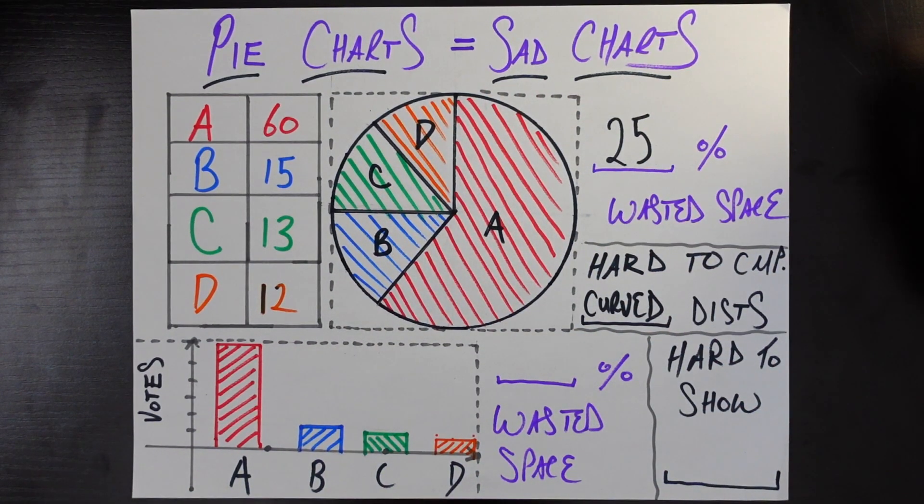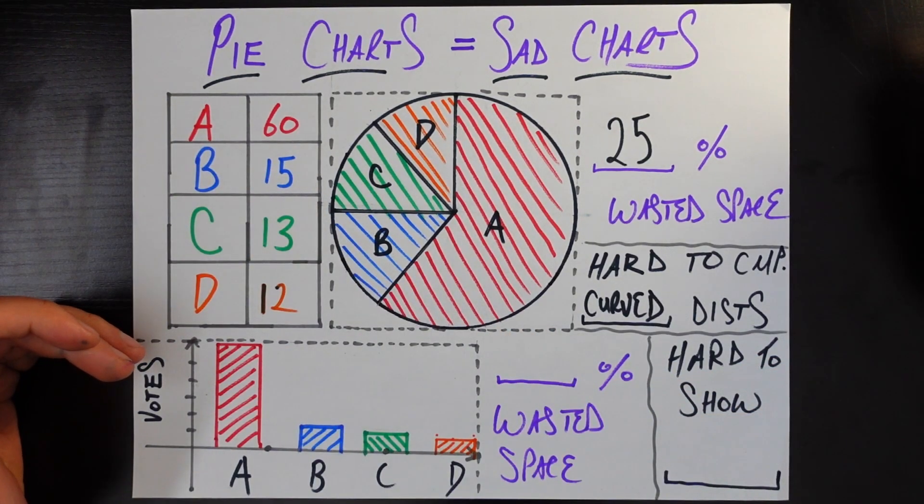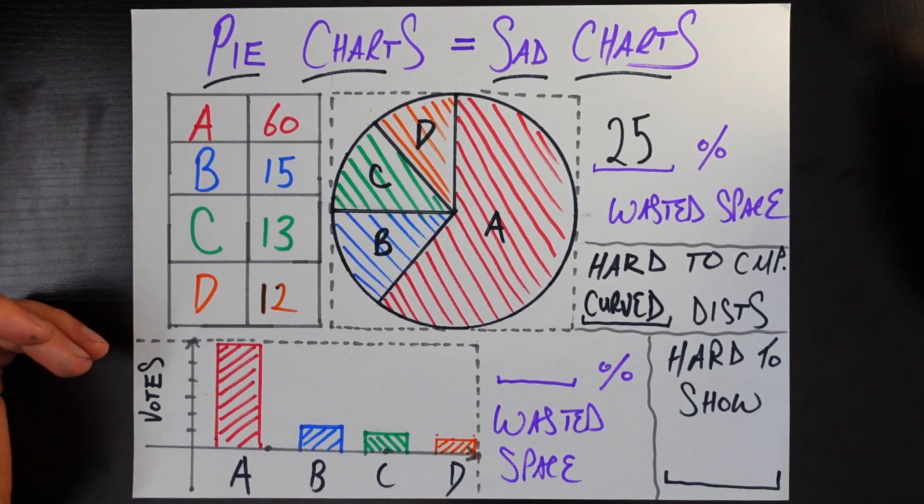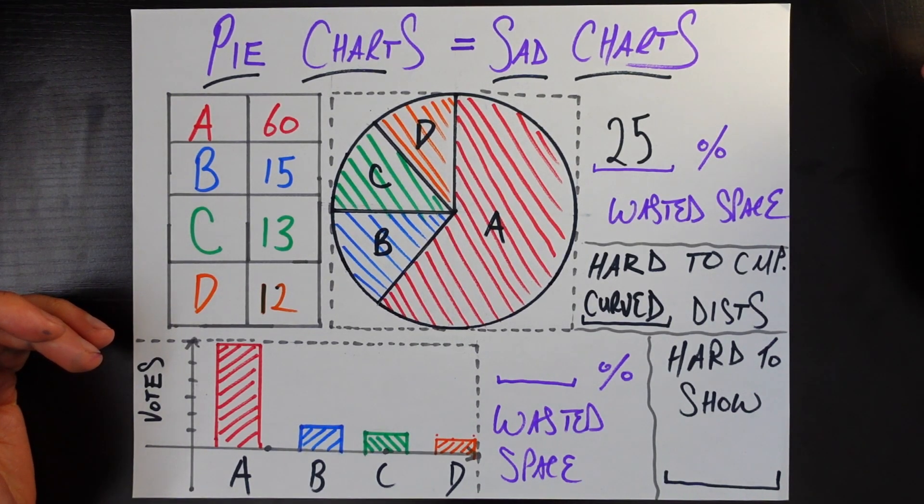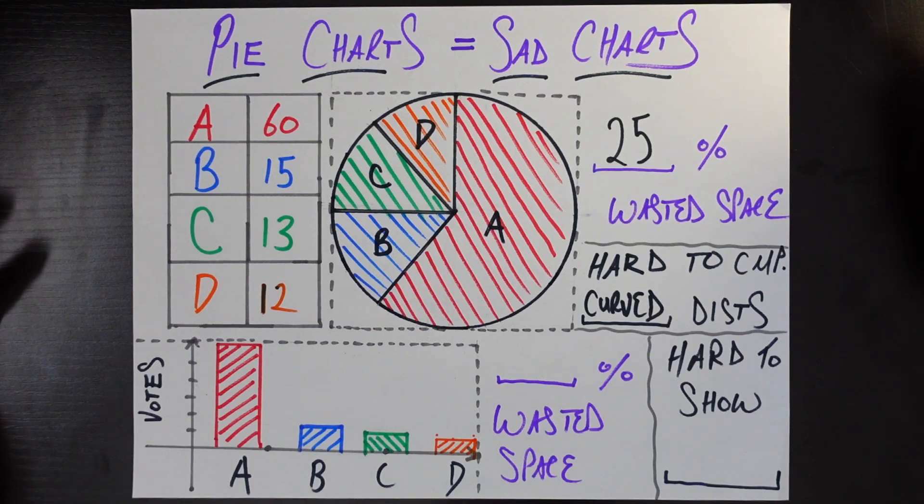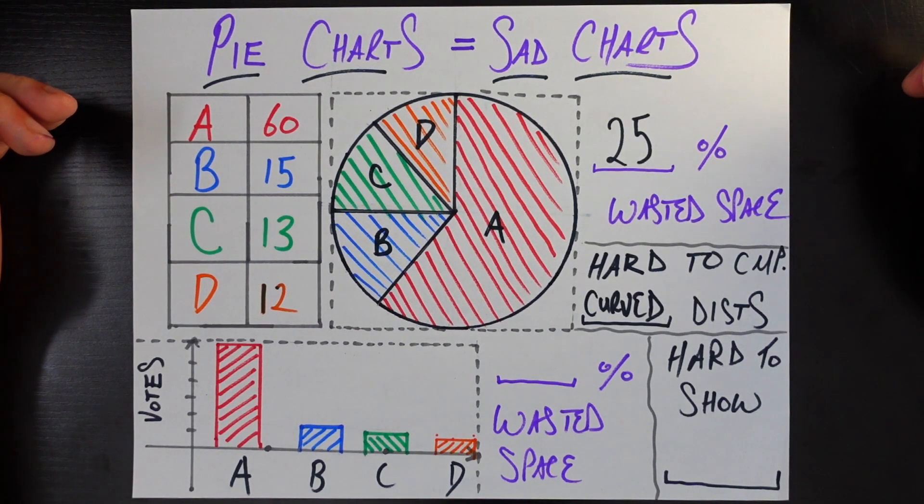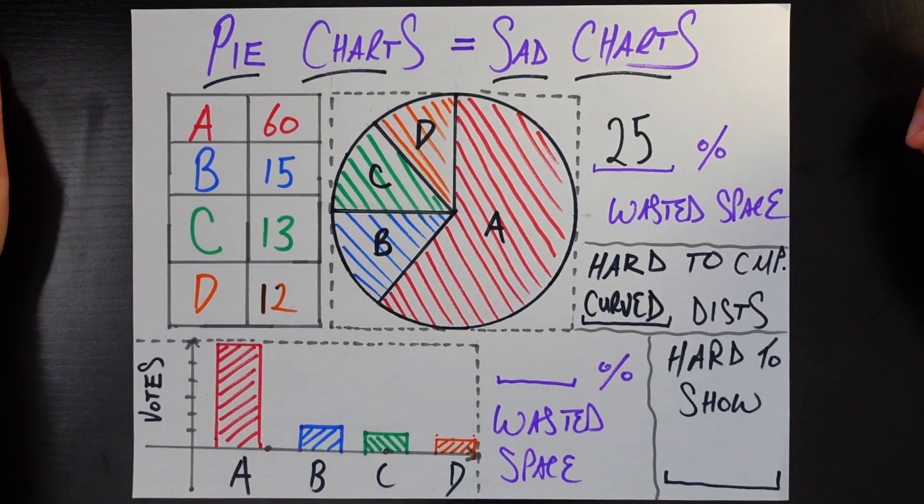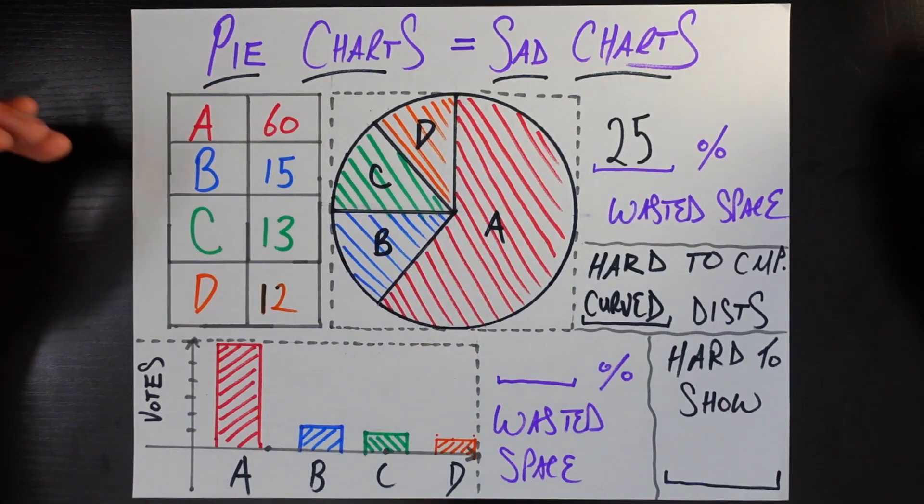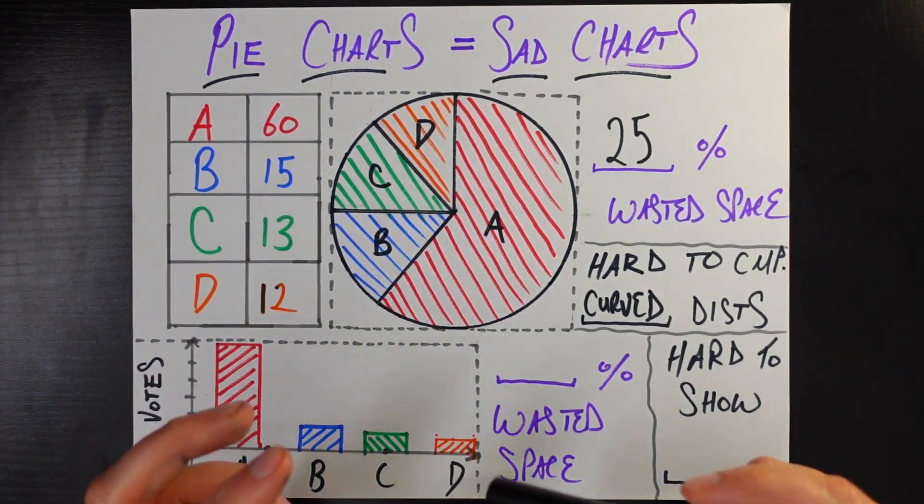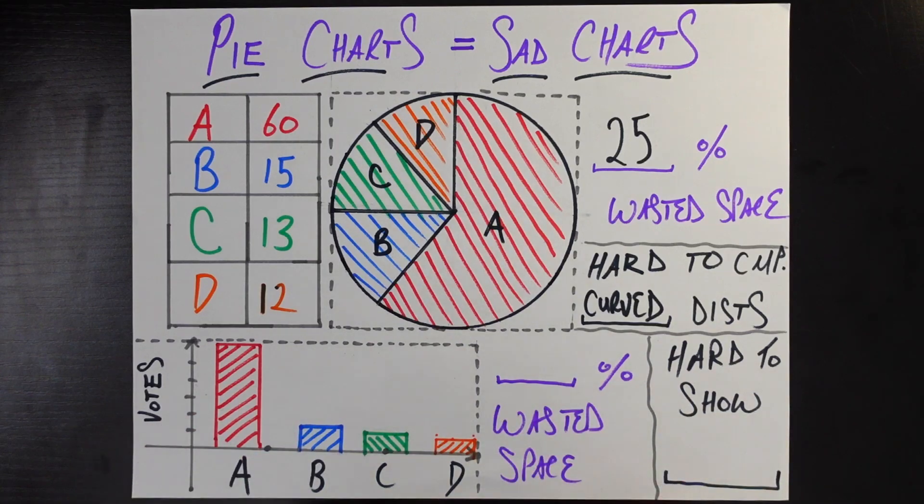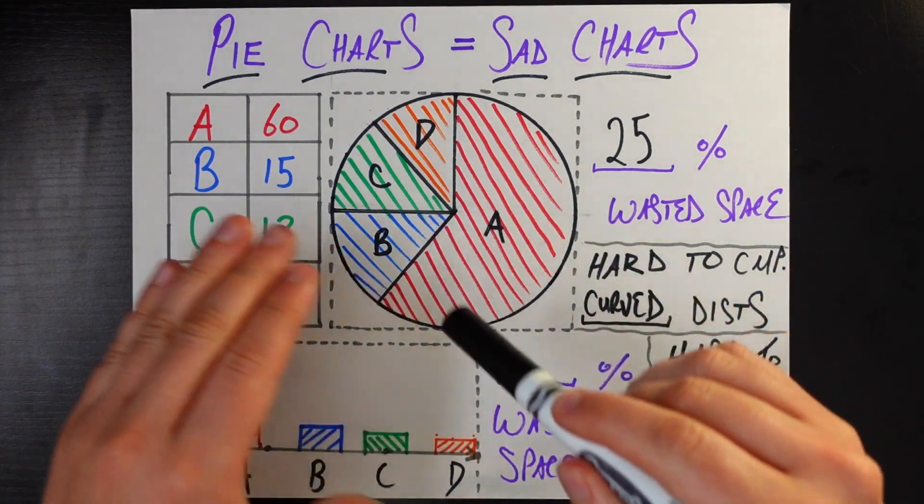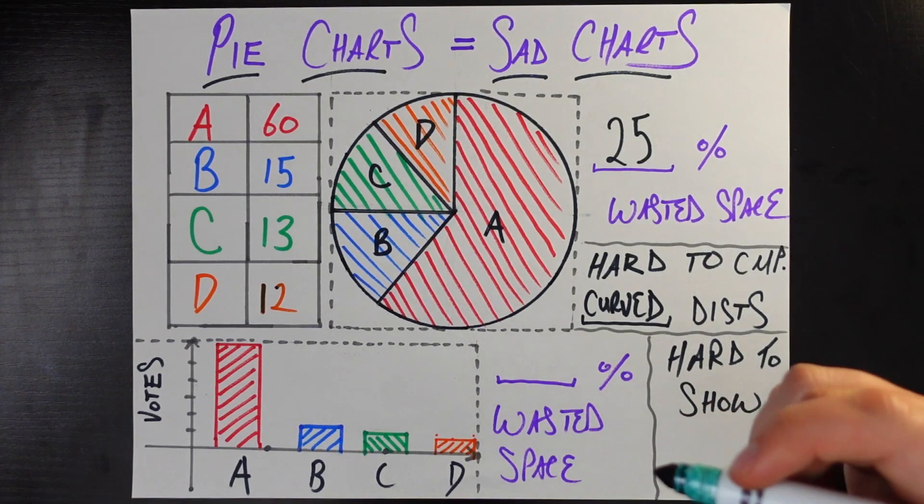And what's that? You need one more reason that pie charts are sad charts? Well, this one comes from a more data science-y perspective. But if you look at these numbers, the sample size here is large but not huge. There's a total of 100. And so it might be nice to see error estimates. For example, there's 60 people that voted for A. But that's 60% plus or minus what? Are we talking plus or minus 5%? Plus or minus 20%? How much should I trust these estimates?